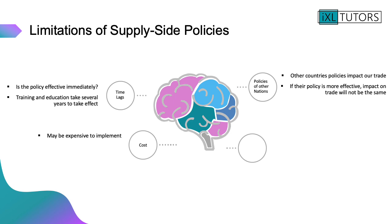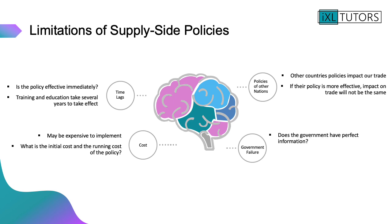Cost is obviously a really big limitation of supply side policies. The government only has a certain amount of funding and has to allocate it to different areas. HS2 is a great example of a project that is very expensive to implement — the more expensive it is, the more the government has to take money away from a different budget. Is that worthwhile in the long term? Think about the initial cost and the running cost. It could be something that generates revenue — HS2, once up and running, will generate revenue and could be really beneficial, so the running cost might potentially be lower.